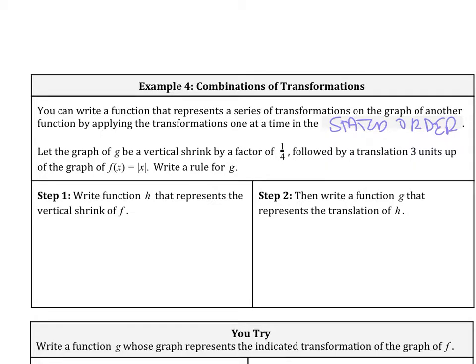Here is an example. Let the graph of g be a vertical shrink by a factor of 1/4. We do that first. Then the next thing is followed by translation 3 units up. Our function we're transforming is f(x) equals absolute value of x.